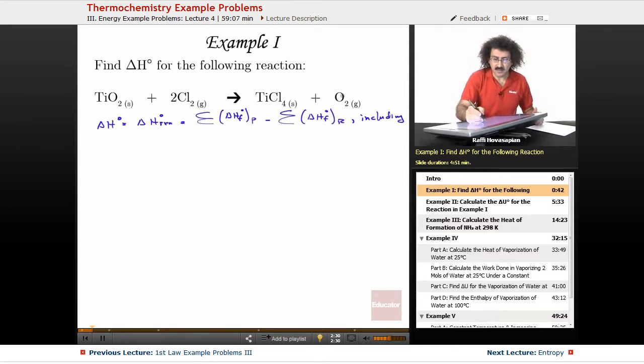You just take the enthalpy of the products, subtract the enthalpy of the reactants, making sure to include the coefficients, and that's it. That gives you the actual enthalpy change for the reaction, the heat of reaction under constant pressure conditions. Because again, under constant pressure conditions, the enthalpy is equal to the heat. So let's just go ahead and calculate this. And again, all we need is a table of thermodynamic data.